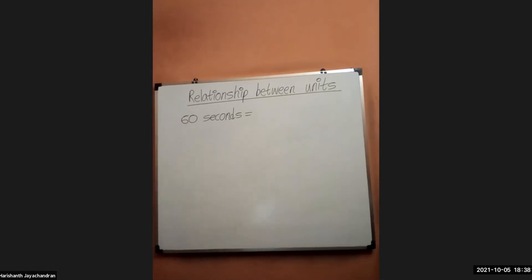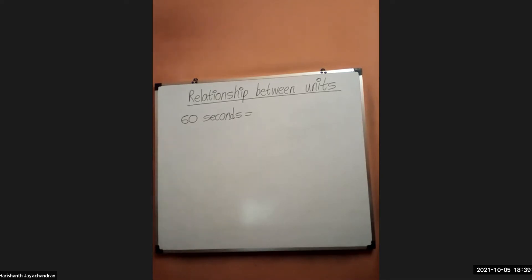We need to look into how we should write the date in standard form. We need to look into a few things based on adding the addition part of time and also the subtraction part of time. Before we move on to the lesson, I'm writing a few things on my whiteboard based on the relationship between the units. We shall look into these relationships, mainly based on a few equations.